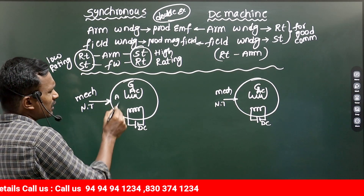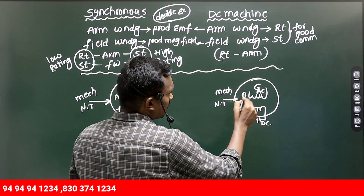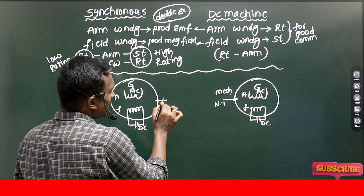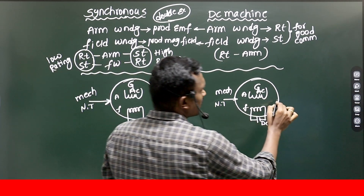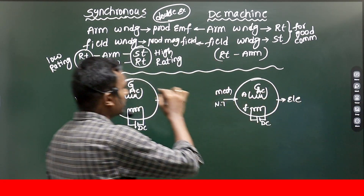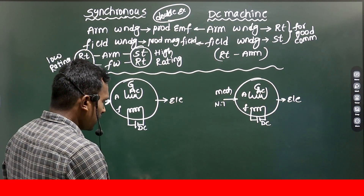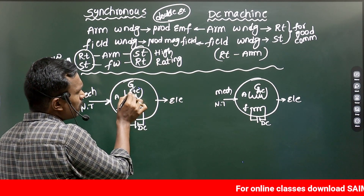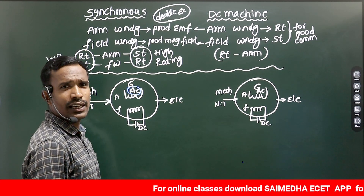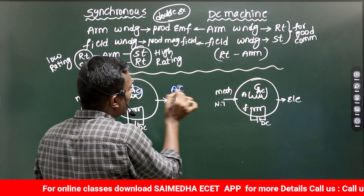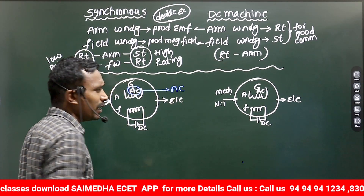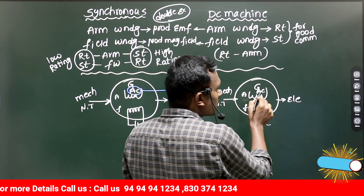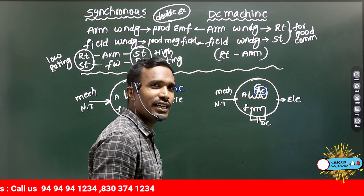In the synchronous generator, mechanical input is given and it produces electrical output. The EMF induced in the armature conductors is AC, and the electrical output is also AC. So in synchronous generator, the armature EMF is AC and the output is AC — no conversion needed.